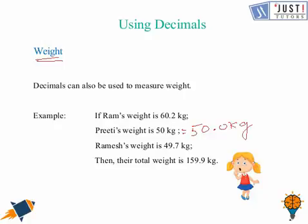Ramesh's weight is 49.7 kilograms. Now we need to find out the total weight, so we need to add all of them together and the answer would be 159.9 kilograms. So in this way we can use decimals while working with weights.